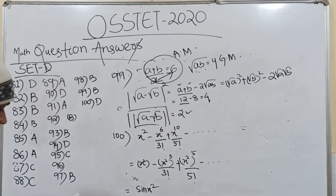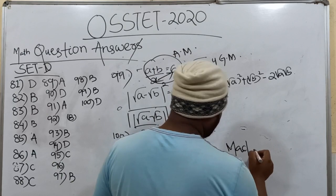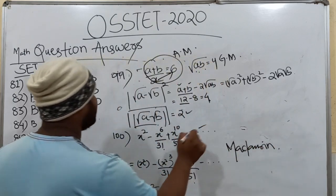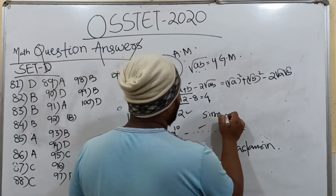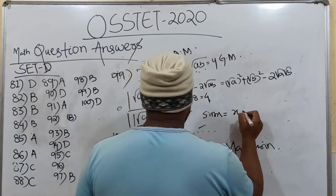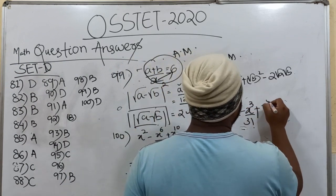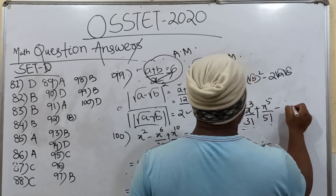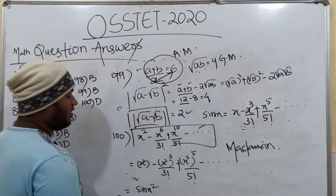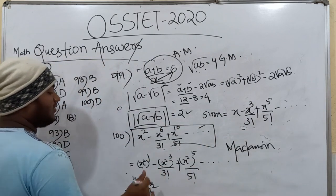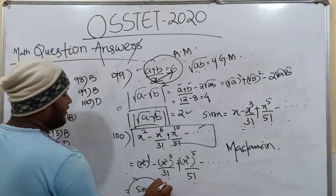Q100 is the Maclaurin series. I have sin x. Sin x is equal to x minus x by 3 factorial plus x by 5 factorial minus 1 factorial. When we have this expression, we apply the Maclaurin series expansion.